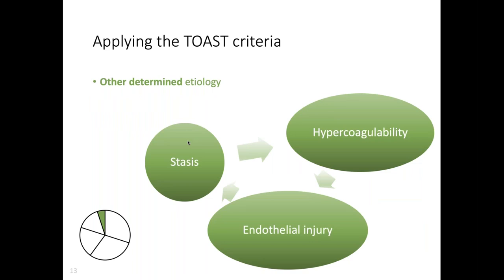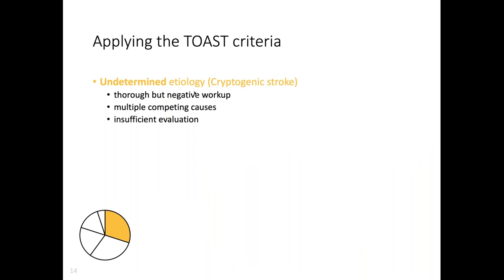Last of these big three is small vessel occlusion or lacunar stroke, which is from little lenticulostriates or pontine perforators that are branches off the main vessels. The analogy I use is like a gravel driveway coming off the highway - the pathology at that 90-degree angle is pretty unique to the brain. The other two categories are other determined etiology - things like carotid dissection, DVT with PFO, Factor V Leiden deficiency - something weird that you can figure out. The last category is stroke of undetermined etiology or cryptogenic stroke, where you've done the whole workup and don't find a cause, or someone has multiple competing causes.